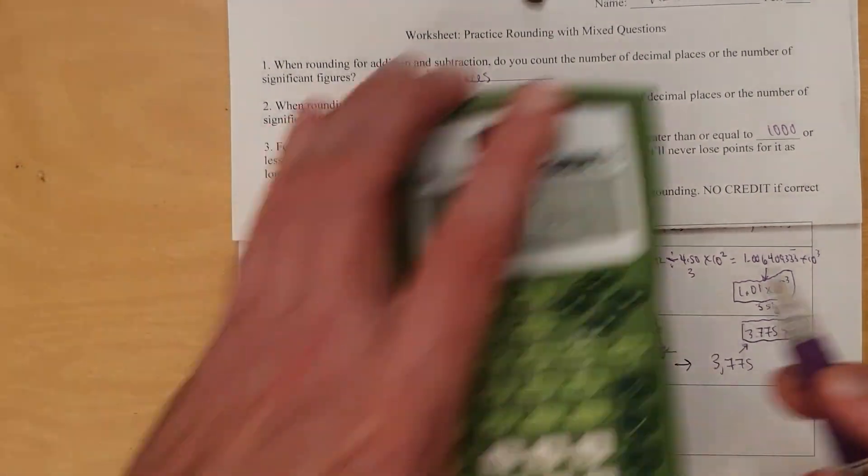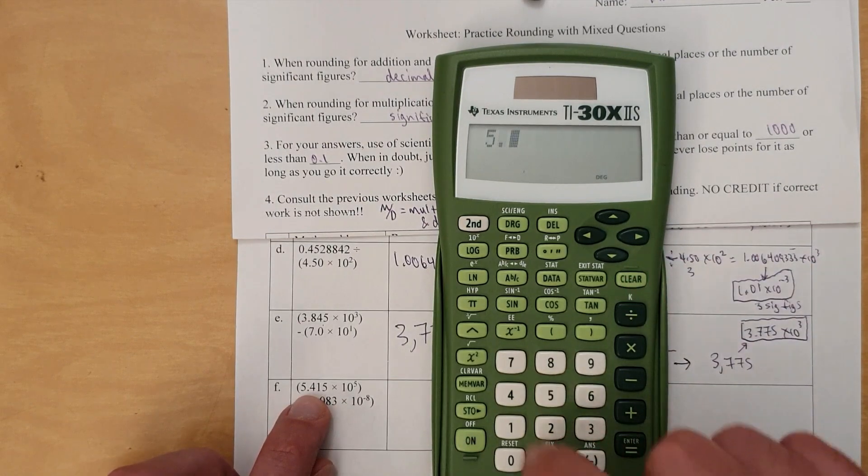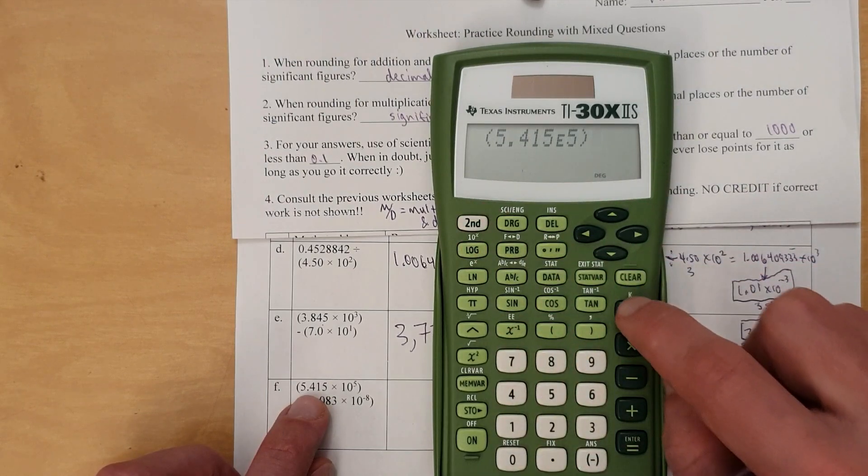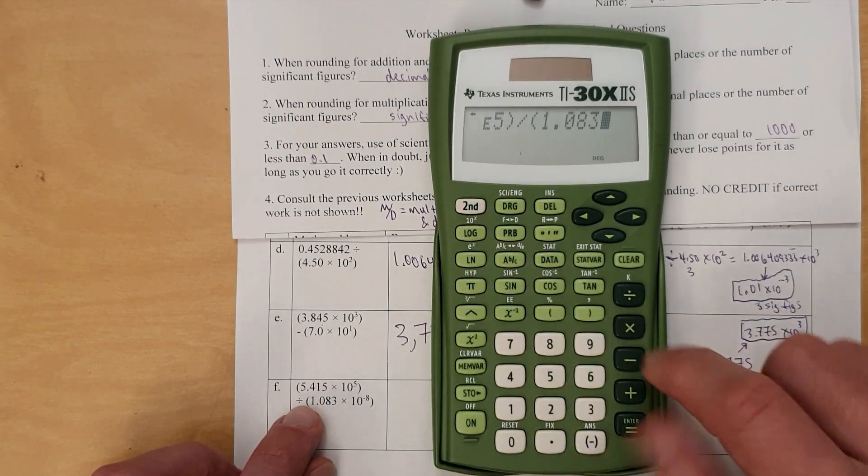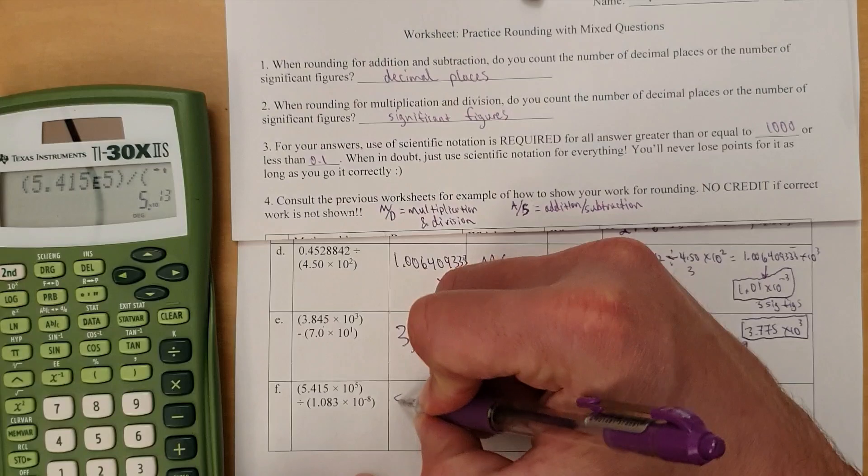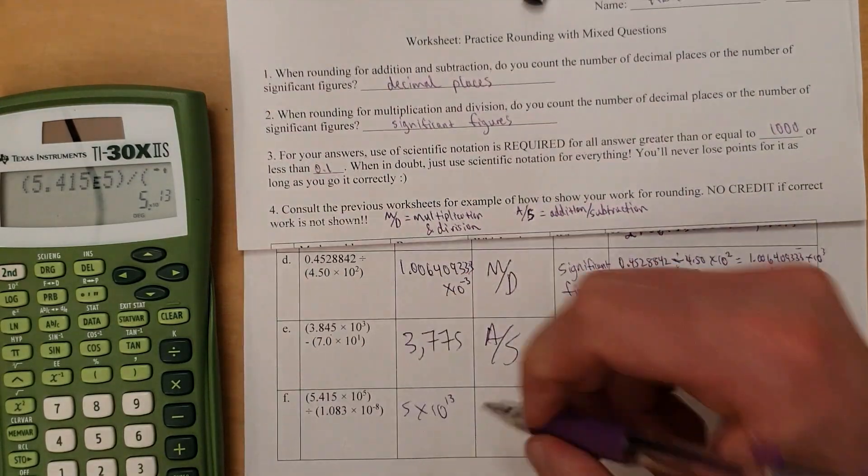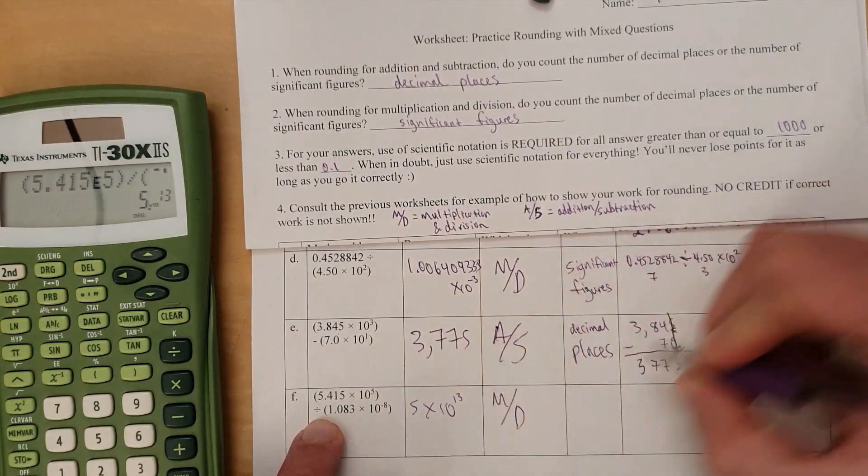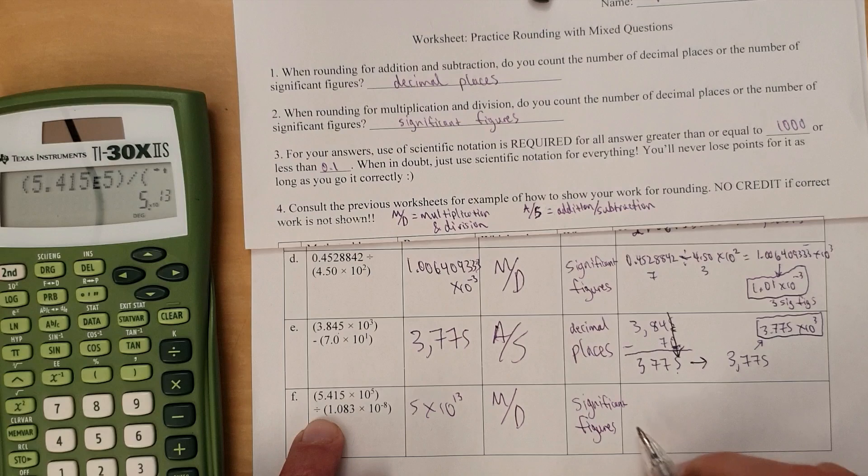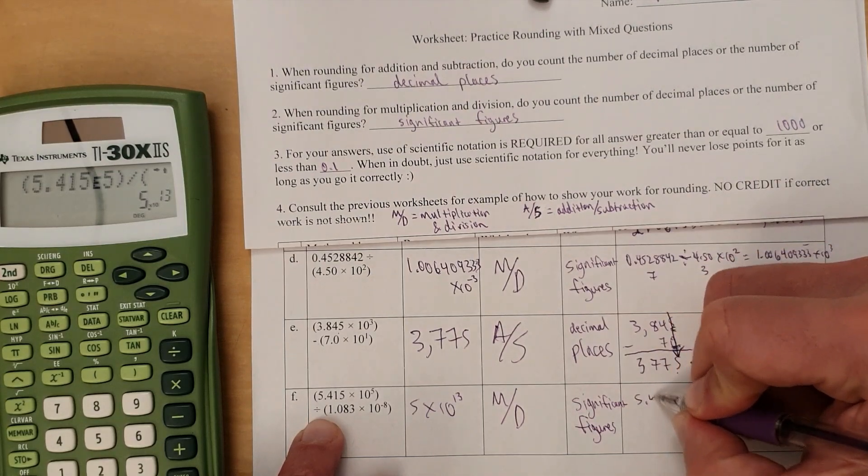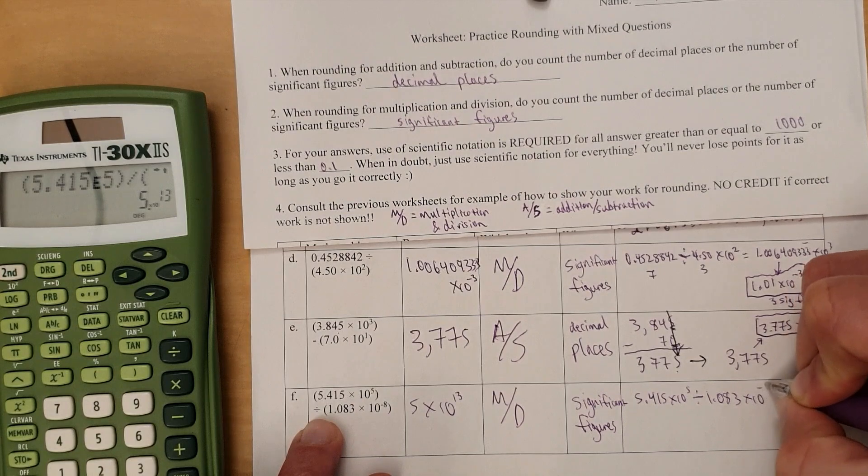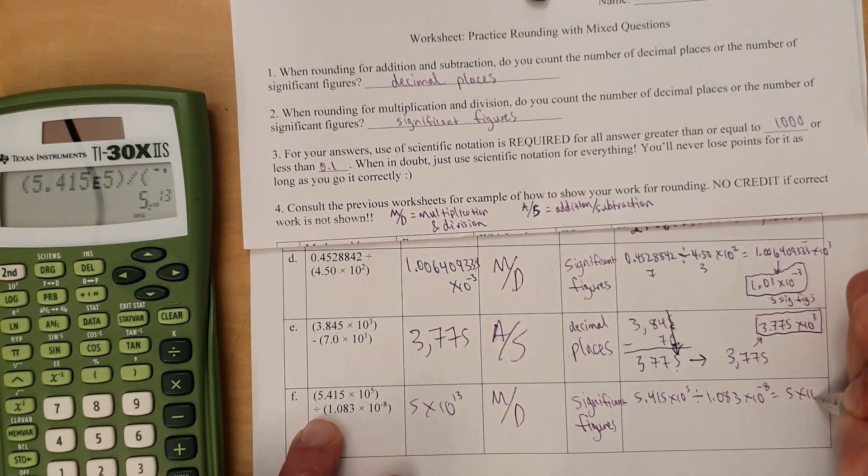Anyway, as for this one, let's do it. 5.415 times 10 to the fifth. Close parentheses. Divided by 1.083 times 10 to the power of negative 8. And that's just 5 times 10 to the 13th. Well, that's a simple answer. Clearly, because with this, we're doing multiplication division rules, which means we are counting significant figures. 5.415 times 10 to the 5th divided by 1.083 times 10 to the negative 8th equals 5 times 10 to the 13th.